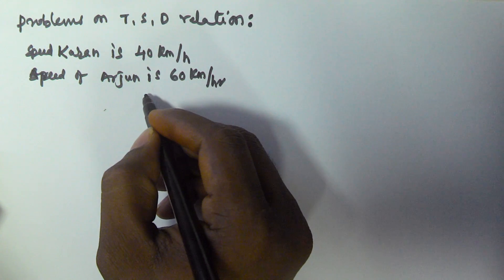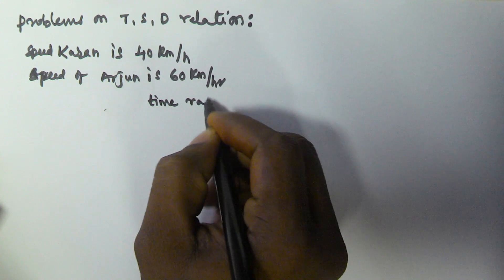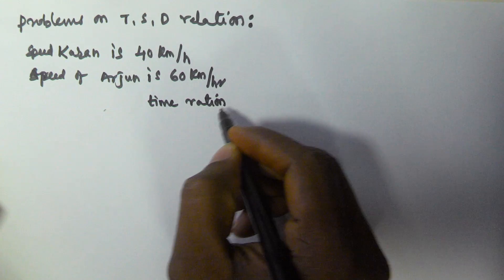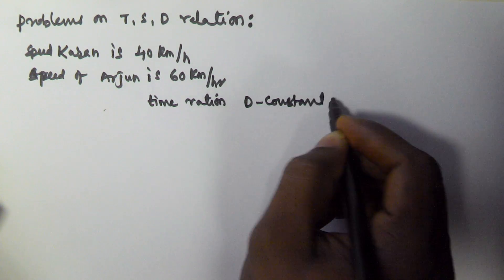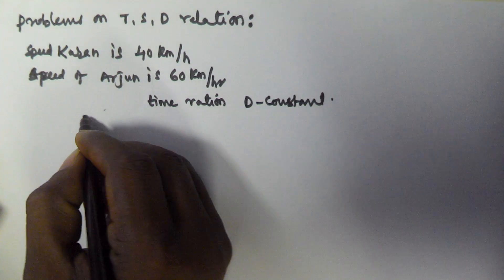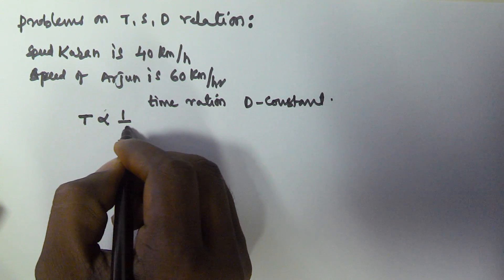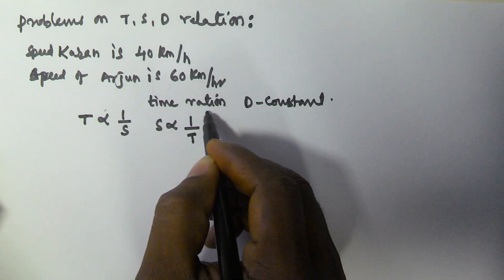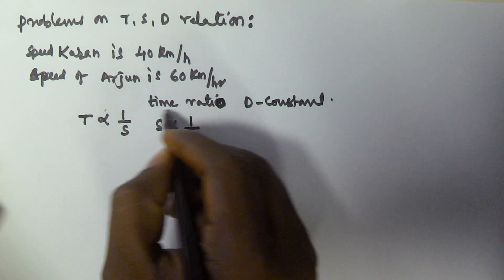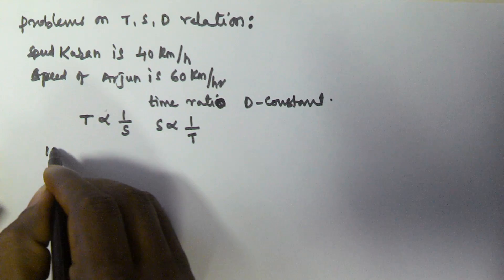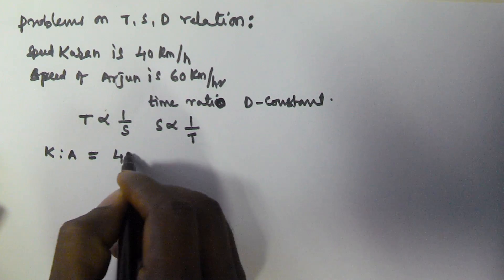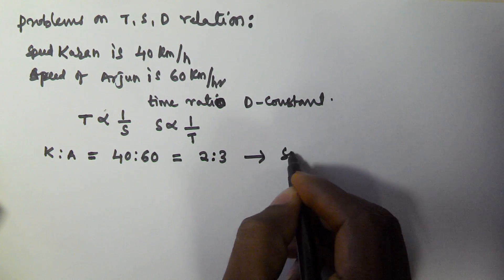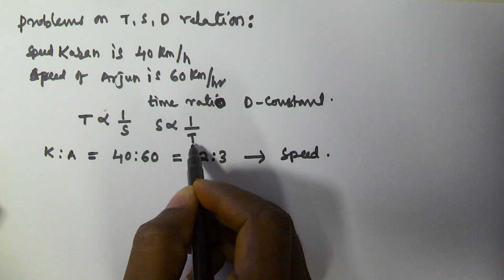We have to find the time ratio taken by both of them to cover the same distance. Since the distance is constant, the time is inversely proportional to the speed. The speed ratio of Current and Arjun is 40:60, which simplifies to 2:3.